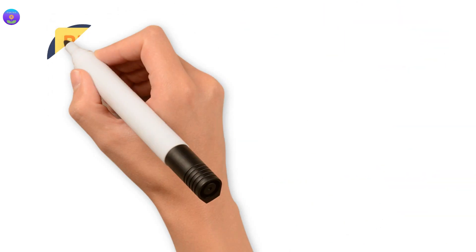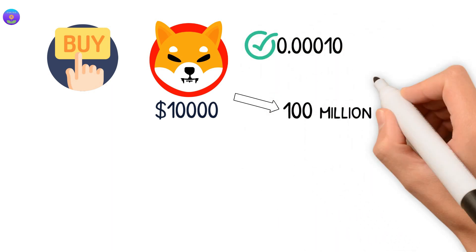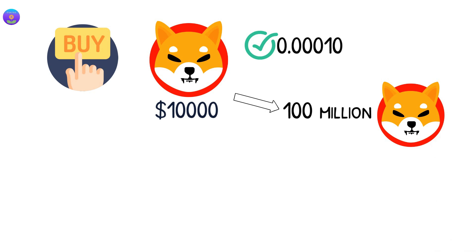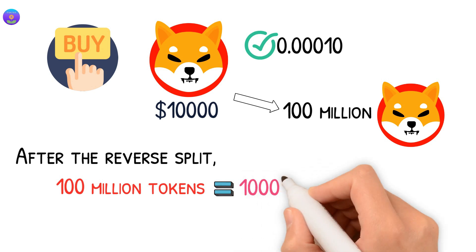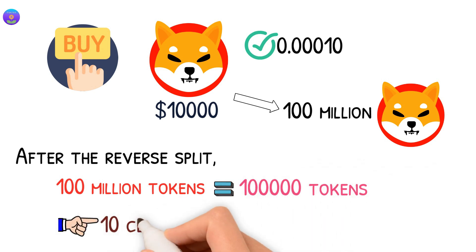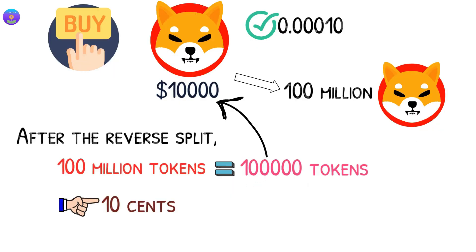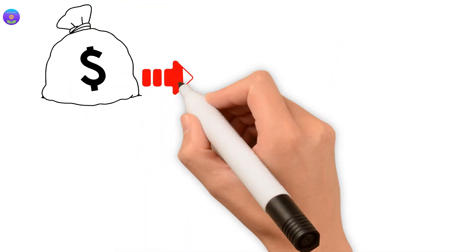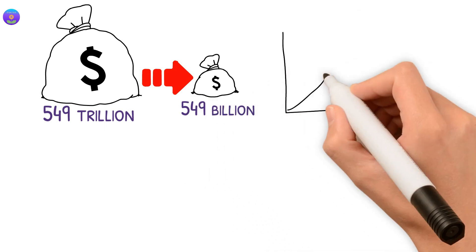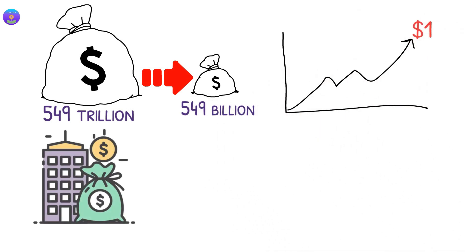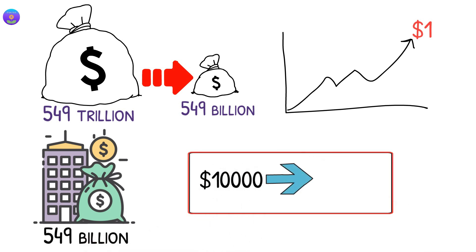For example, let's say you bought ten thousand dollars of Shiba at the price of three zeros ten. This will give you one hundred million Shiba tokens. After the reverse split, you will find out that your one hundred million tokens became one hundred thousand tokens at the price of ten cents with the same value of ten thousand dollars. Since the supply will shrink from five hundred and forty-nine trillion to five hundred and forty-nine billion, the price could go to one dollar with a market cap of five hundred and forty-nine billion. And your investment of ten thousand is now worth 100k.